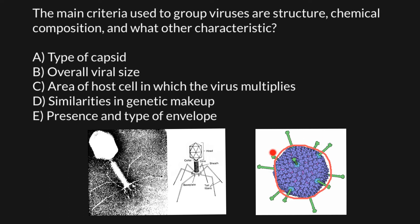This membrane helps the virus avoid recognition by the immune system. So some viruses may have an envelope and some may not. Usually those that infect eukaryotic cells may have it, while those that infect bacteria and plant cells, which have a cell wall, don't have this envelope. But there are always different variants possible, so this is also not a very reliable method for grouping viruses.